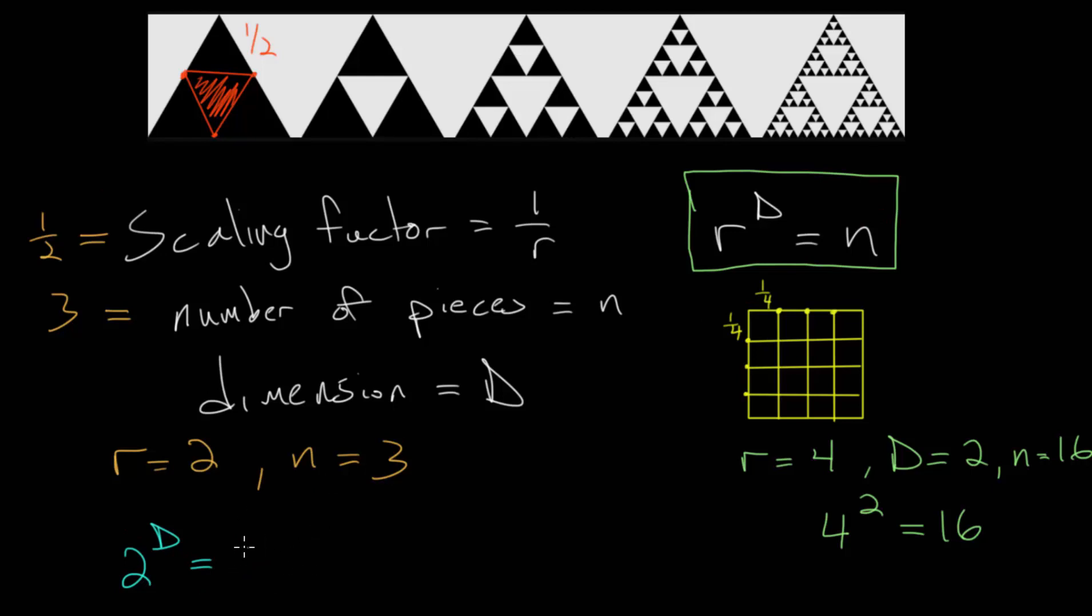This equation, this exponential equation, is asking us what power we have to raise 2 to to get 3. We can rewrite this as a logarithm and then evaluate that on a calculator. Since if we have a to the b is equal to c, we can rewrite this exponential equation as a logarithm.